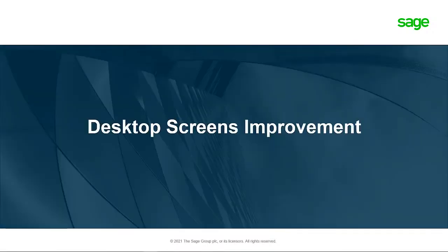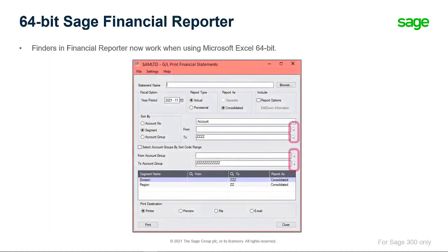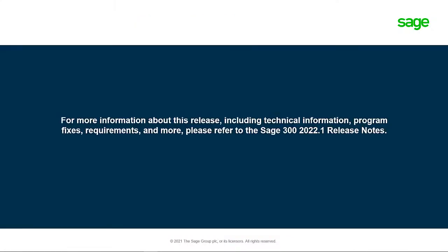Let's now review the desktop screen's improvements. With this version, there is now Finder support for 64-bit Financial Reporter. For more information about this release, including technical information, program fixes, requirements, and more, please refer to the Sage 300 2022 Product Update 1 release notes.